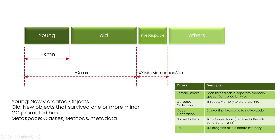When we write a Java application, the application contains multiple class files. The class definitions are stored in this metaspace region. One thing I want to make very clear: there is a class object — class objects are not stored in the metaspace region. The class objects are stored in the young generation and old generation only.